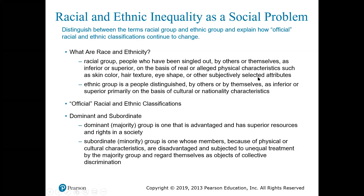When we think of dominant and subordinate groups, the terms majority group and minority group are widely used, but their meanings are less clear as the composition of the U.S. population changes. Many sociologists prefer the terms dominant and subordinate to identify power relationships based on perceived racial, ethnic, or other attributes. A dominant or majority group is one that is advantaged and has superior resources and rights in society, determined on the basis of race, ethnicity, gender, sexual orientation, or physical ability. A subordinate or minority group is one whose members, because of physical or cultural characteristics, are disadvantaged and subjected to unequal treatment by the majority group.